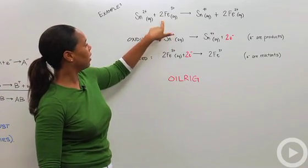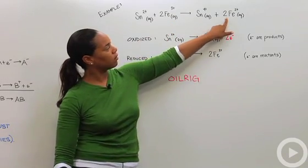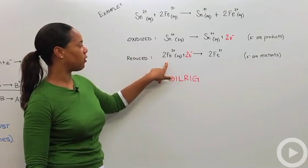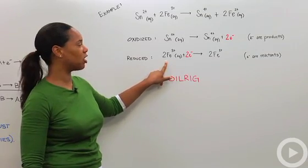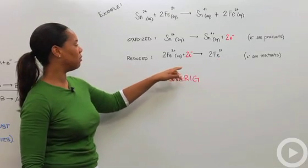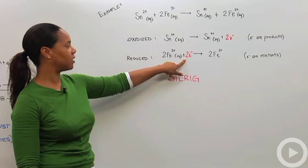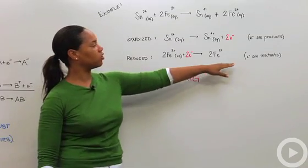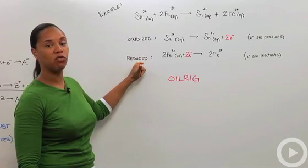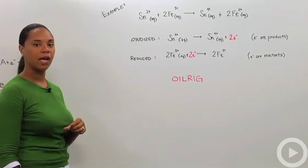Here our iron, we have 2 Fe 3+ to start and 2 Fe 2+ to end with, which means on our reactant side we have a 6+ charge and on our product side we have a 4+ charge. That means we must have gained these two electrons here on the reactant side, meaning that our electrons are our reactants and iron has been reduced. And that is basically the crux of half reactions.